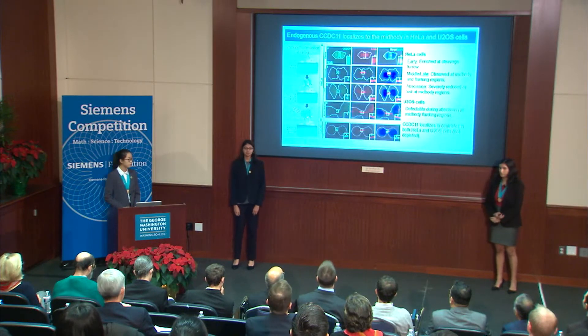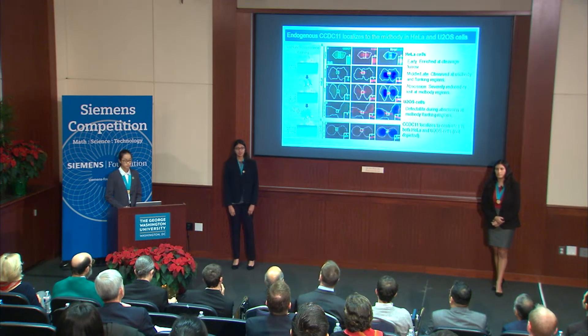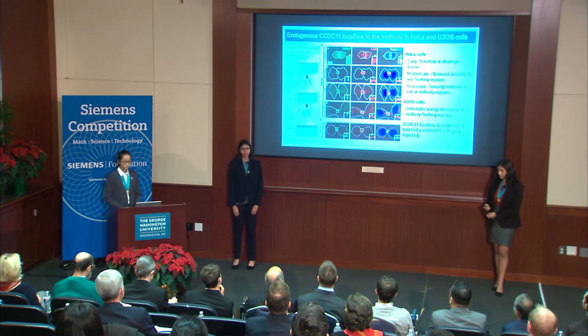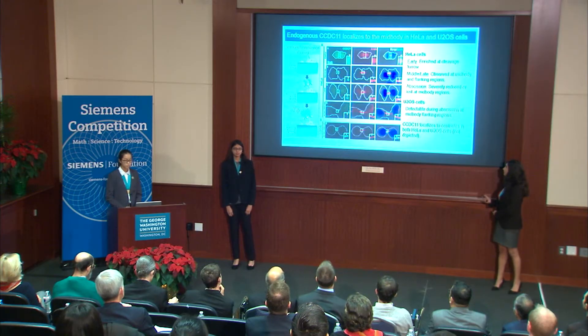To explore our experimental questions, we performed a series of experiments. HeLa and U2OS cells were immunostained for CCDC11 in green, microtubules in red, and nuclei in blue. We found that in the beginning stages of cytokinesis, CCDC11 was enriched at the cleavage furrow. In mid-cytokinesis, CCDC11 localized to the mid-body, and in late cytokinesis, CCDC11 was found at the flanking regions of the mid-body, indicated by the dark gap between the acetylated alpha-tubulin and microtubules. During abscission, CCDC11 dissociated.